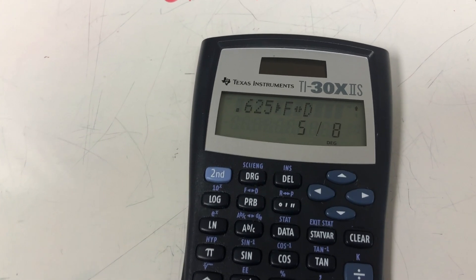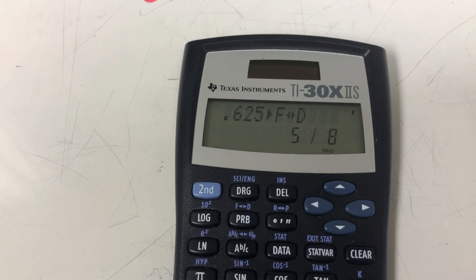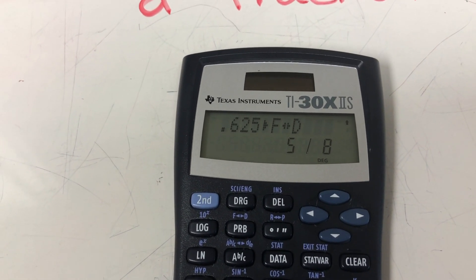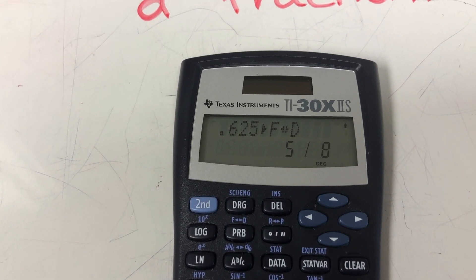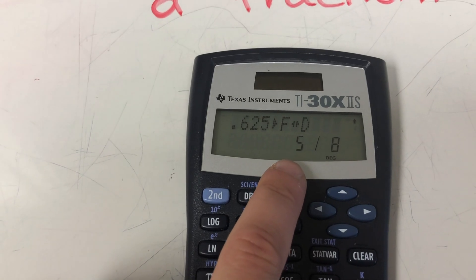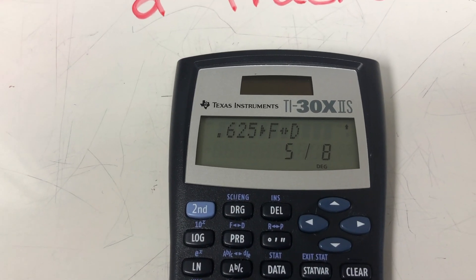I'll hit enter, and it's going to tell me that 0.625, or 625 thousandths, is equal to five-eighths as a fraction. This feature is kind of nice because it already gives you the fraction in simplest form as well.